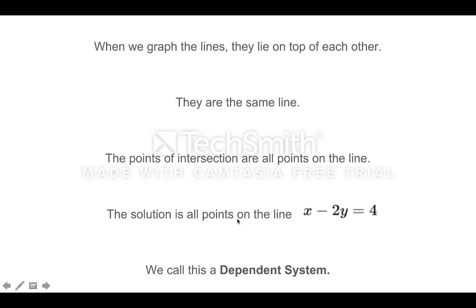They intersect at all points on that line. So the solution, where do the lines intersect? All the points on the line. We give this a name as well. We call this a dependent system.